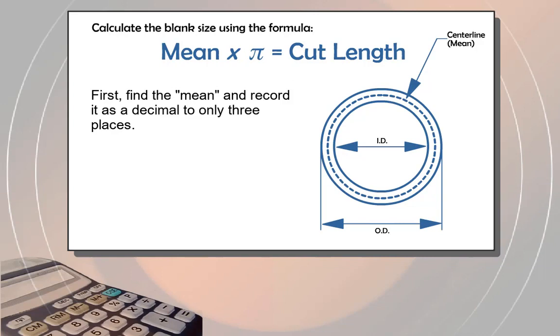First, find the mean and record it as a decimal to only three places. Next, record the answer after multiplying the mean by pi.